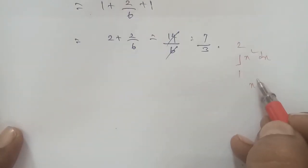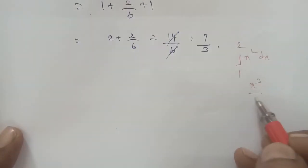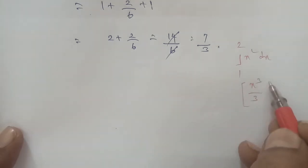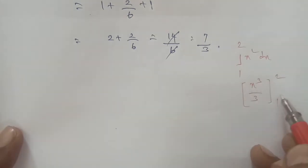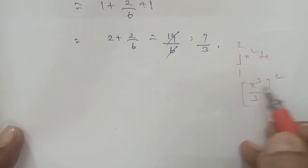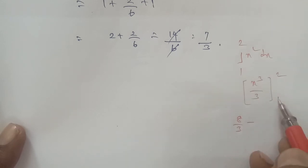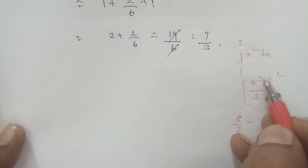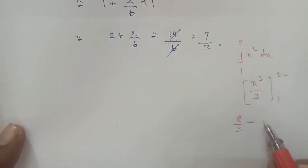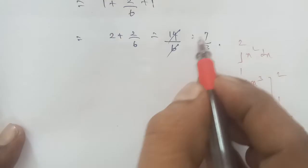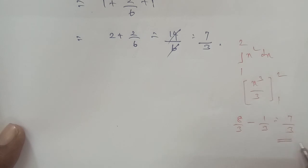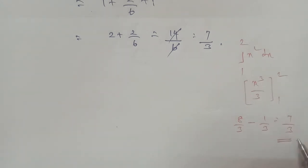Verification: integrating x squared gives x cubed by 3, with limits 1 to 2. Applying the upper limit: 2 cubed by 3 equals 8 by 3. Applying the lower limit: 1 cubed by 3 equals 1 by 3. So the answer is 8 by 3 minus 1 by 3 equals 7 by 3. That's the answer. Thank you.